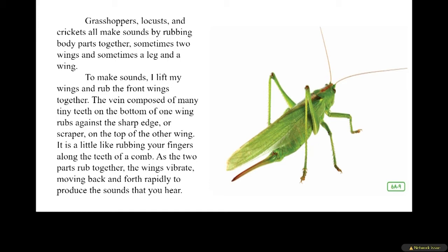Grasshoppers, locusts, and crickets all make sounds by rubbing body parts together — sometimes two wings and sometimes a leg and a wing. To make sounds, I lift my wings and rub my front wings together. The vein, composed of many tiny teeth on the bottom of one wing, rubs against the sharp edge, or scraper, on the top of the other wing. It is a little like rubbing your fingers along the teeth of a comb. As the two parts rub together, the wings vibrate, moving back and forth rapidly to produce the sounds that you hear.